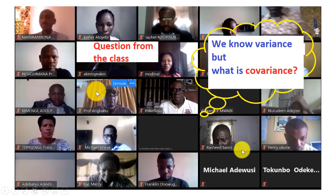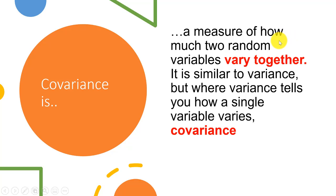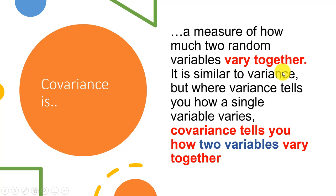A student asks: we know variance, so what is covariance? Covariance is the brother of variance. More precisely, covariance is a measure of how much two random variables vary together. It is similar to variance, but where variance tells you how a single variable varies, covariance tells you how two variables vary together — for example, pre-test and post-test, or before and after scores.